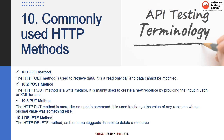Now let's look at commonly used HTTP methods. 1. The HTTP GET method is used to retrieve data. It is a read-only call and data cannot be modified. If the request is successful, a status code of 200 OK is received along with the requested data in JSON or XML format. GET is considered a safe method as no corruption or modification of data occurs. 2. The HTTP POST method is a write method, mainly used to create a new resource by providing input in JSON or XML format. When a POST request is made, a new resource is created. If error-free, the status returned is 201. These methods are not idempotent and can result in errors or duplicate records if called more than once.